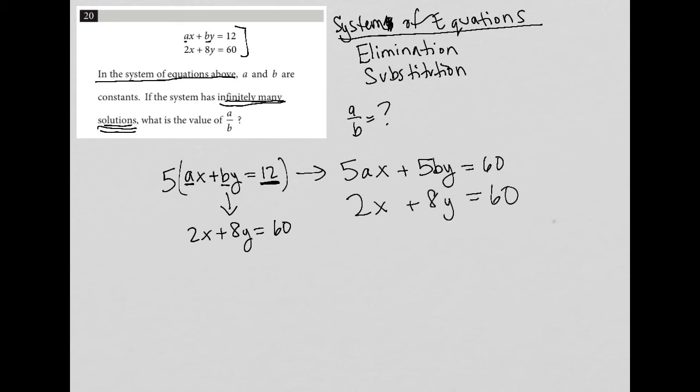So again, I know that they need to be equal. So somehow I need to make this 5A equal to 2. That would make the number in front of the X the same for both equations. And I need to make this 5B equal to 8, because that would make the coefficient in front of Y the same for both.